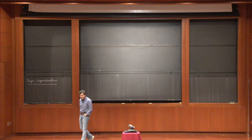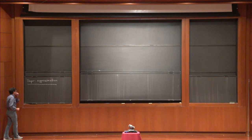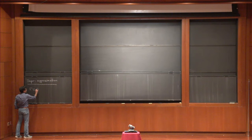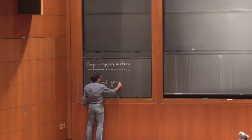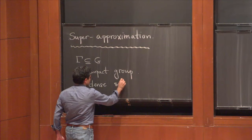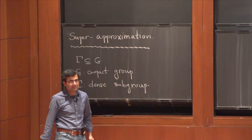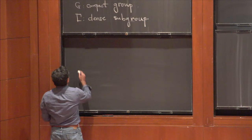I will start with a very general setting — a general kind of question, and it is a vague question on purpose. The question is: I start with a dense subgroup of a compact group. So G is a compact group and gamma is a dense subgroup, and we ask ourselves how dense is gamma? This is a vague question that we want to understand or formulate better.